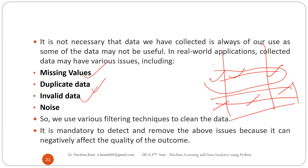Invalid data means the data collected is numerical, but then there is one row where character data is available — that is invalid. Then there is noise. When we collect image data, the data is not always numbers. Sometimes when you click an image, maybe due to camera shake the image becomes blurred, or the subject is moving, so the image gets blurred — noise is introduced. You have to enhance the quality of the image by removing that noise, using different filtering techniques. It is mandatory to detect and remove these issues, because they can negatively affect the output of your final machine.